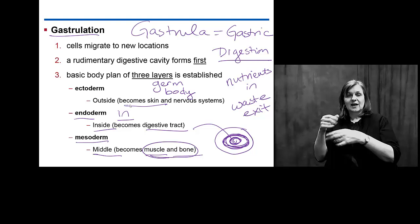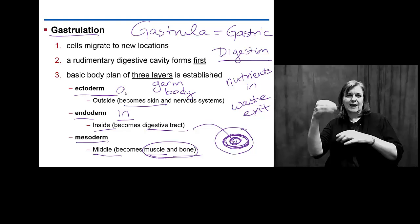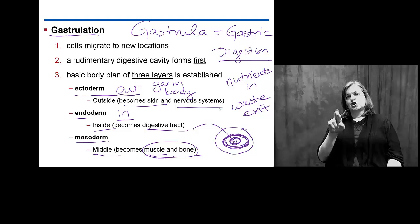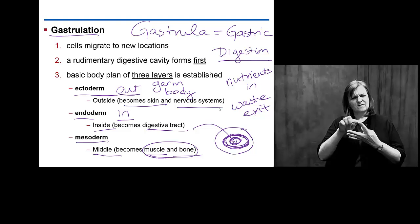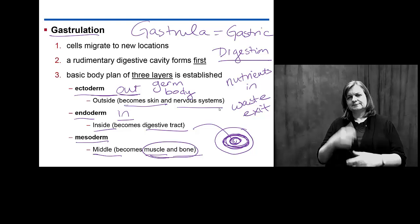On the outside, you have skin. This layer is known as ectoderm — ecto being on the outside. Skin and your nervous system. If you've talked before about your skin and the development of your skin, you know that in that layer you have a lot of nerve endings. Think about the sensitivity of your fingers — that's all associated with the nerves in your skin.